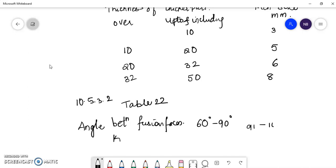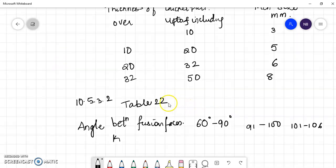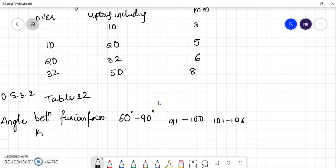91 to 100, 101 to 106, 107 to 113, and 114 to 120. So in this case, k is to be taken as 0.7 and it goes on reducing with increase in angle.